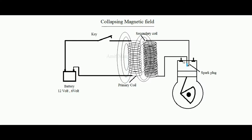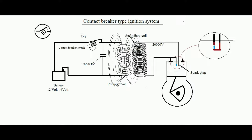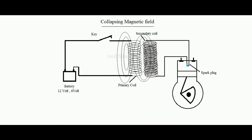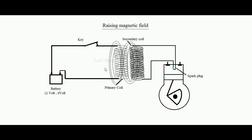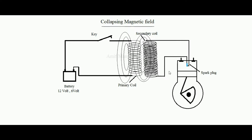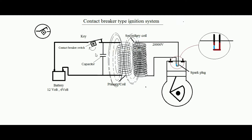Now, coming to the system called the contact breaker type ignition system. On time, we have to either close or open the key K exactly when a spark is needed. The job of opening and closing this key on time is done by a contact breaker switch.